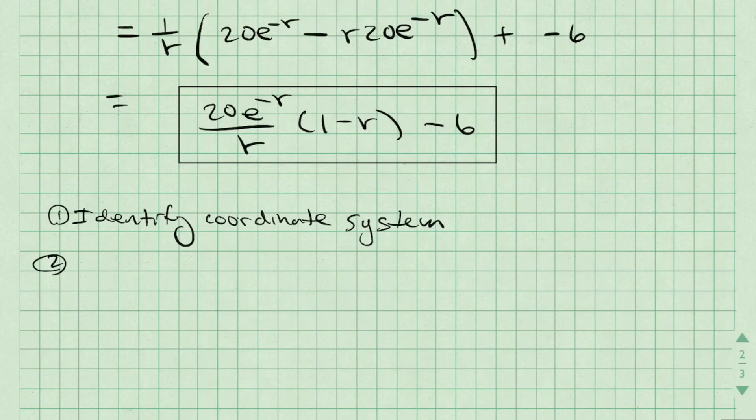Alright, to wrap this up and summarize, we are going to follow these steps to compute the divergence. First, we're going to identify the coordinate system. Second, we're going to identify the components. And lastly, we're going to apply the correct equation.